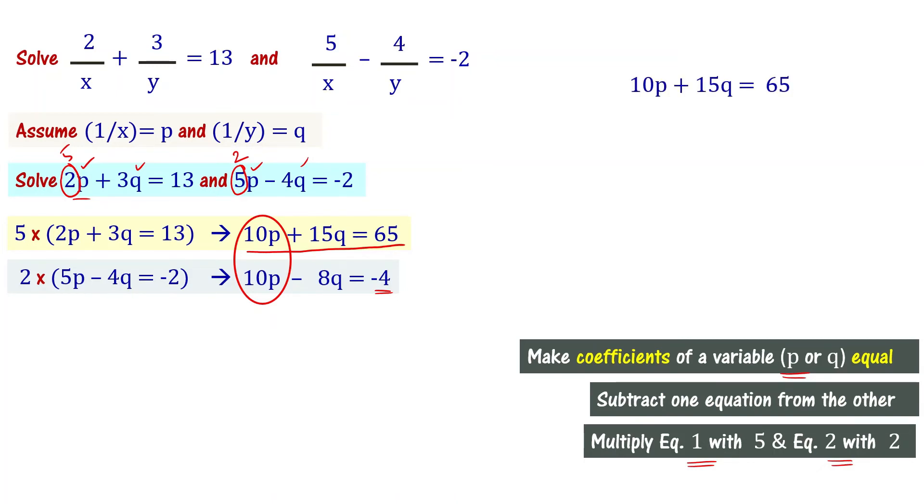10p plus 15q equal to 65 minus 10p minus 8q equal to minus 4. To subtract, take the second equation and change the symbols of each term. Minus 10p becomes plus 10p, minus 8q becomes plus 8q, and minus 4 becomes plus 4. When you subtract, 10p cancels. 15 plus 8 is 23q equal to 69. It means q equal to 69 by 23 that is equal to 3.